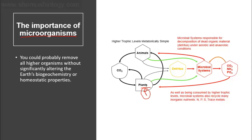Once animals utilize oxygen for respiration they produce CO2, and plants take up that CO2 and assimilate the carbon into food. After the death of animal and plant, they turn into detritus. Microbial systems — bacteria and fungi — can convert the detritus into other components: carbon dioxide, ammonium, and phosphate. So the microbial system is responsible for the decomposition of dead organic material, known as detritus, under aerobic as well as anaerobic conditions.